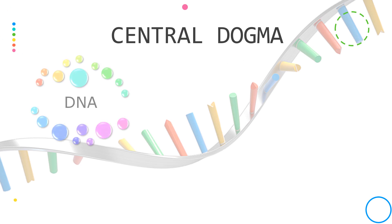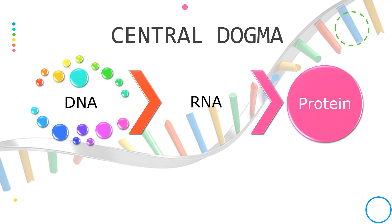Central dogma refers to the pathway for the flow of genetic information. Here the arrows indicate the directions proposed for this transfer of genetic information.